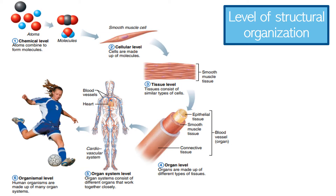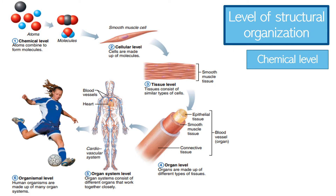Next, we look at levels of structural organization. The simplest level of the structural ladder is the chemical level. At this level, atoms — tiny building blocks of matter — combine to form molecules such as water, sugar, and proteins. Molecules in turn associate in special ways to form microscopic cells, the smallest unit of all living things.